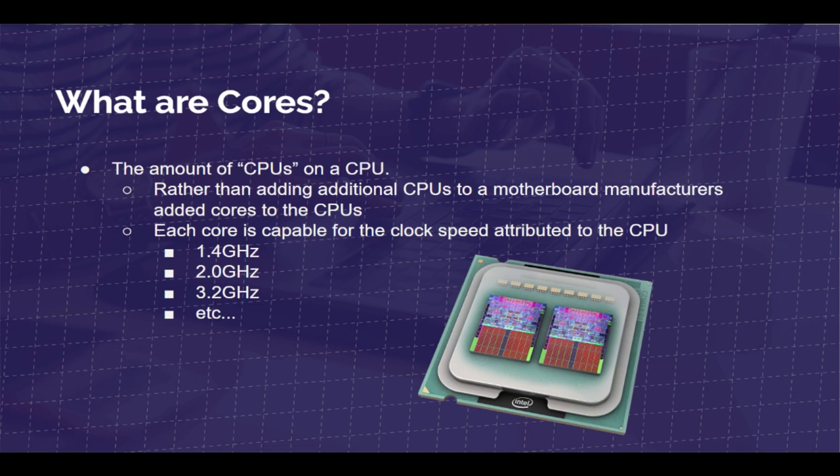What are cores? Well, cores are basically CPUs on a CPU. Up until 2005, cores did not exist. It was one processor with technically one core on it because it was computing the information, but they did not have multiple cores as we know it today.